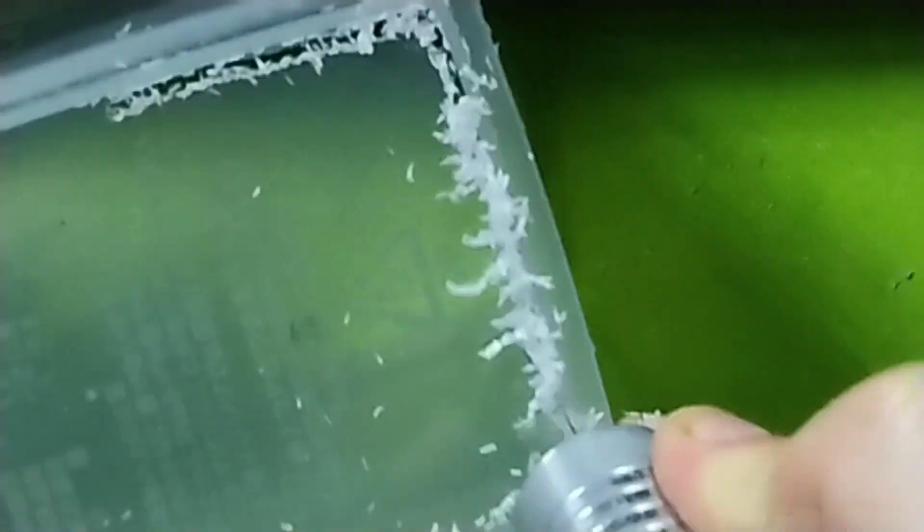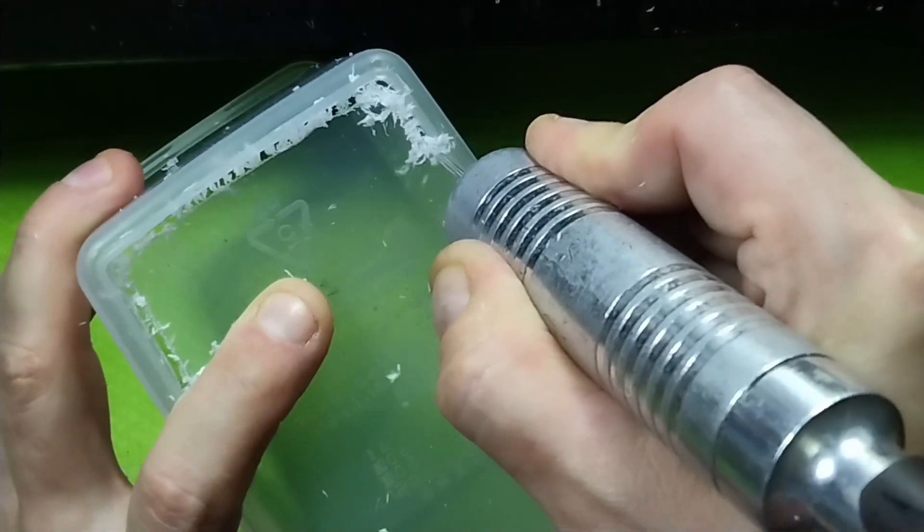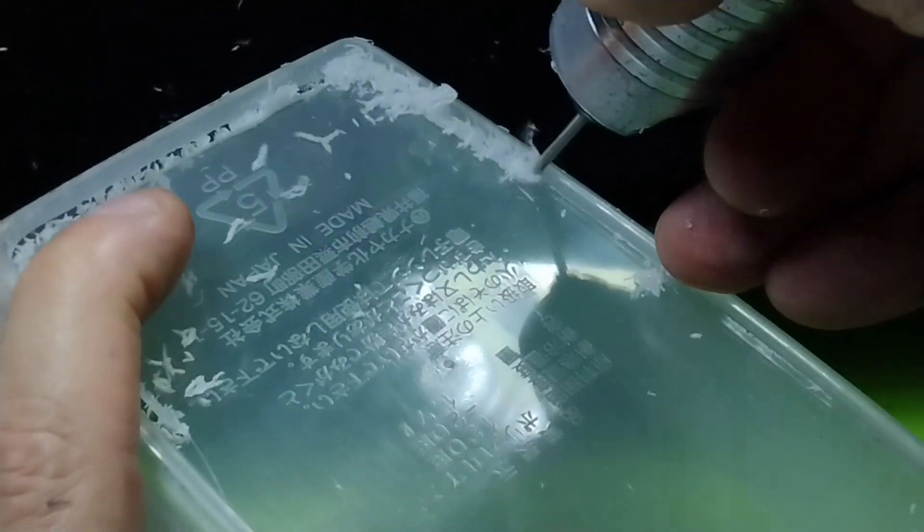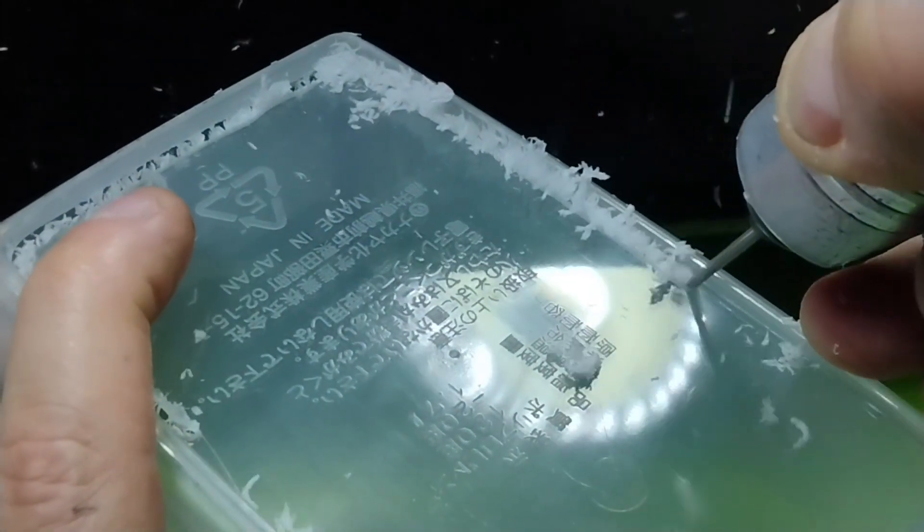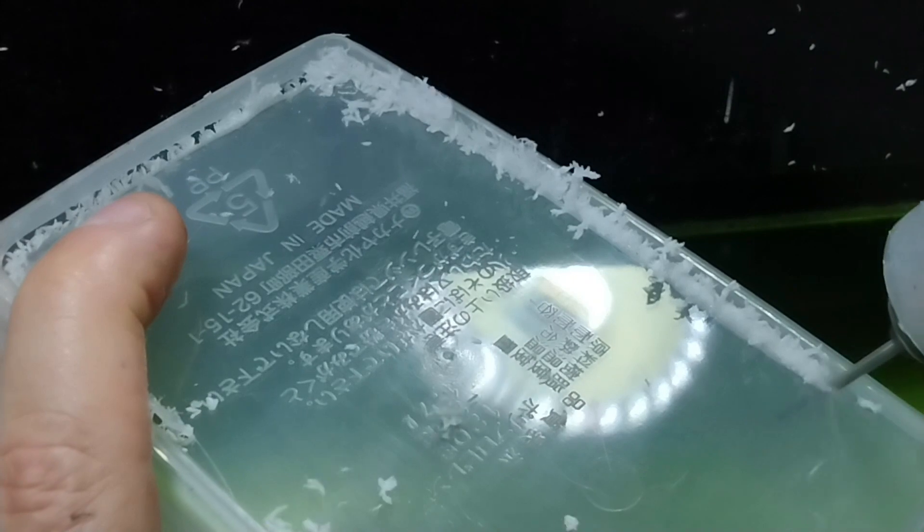It cuts super fast and fairly neatly. Drill a starter hole, insert the 2 mm drill bit and guide the drill where you want it to cut out. Don't use excessive force as you can break the bit. Other sized bits can be used but are more difficult to control.